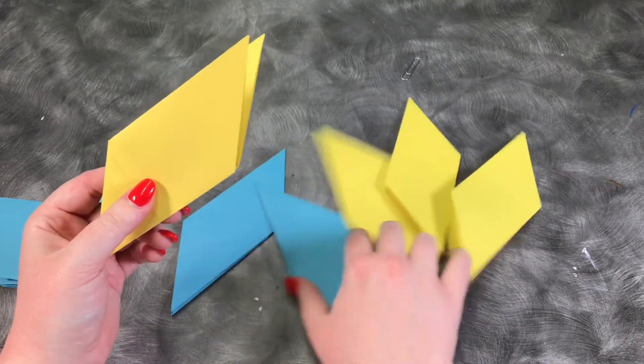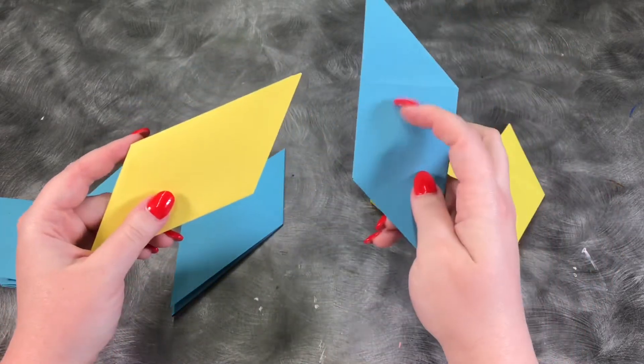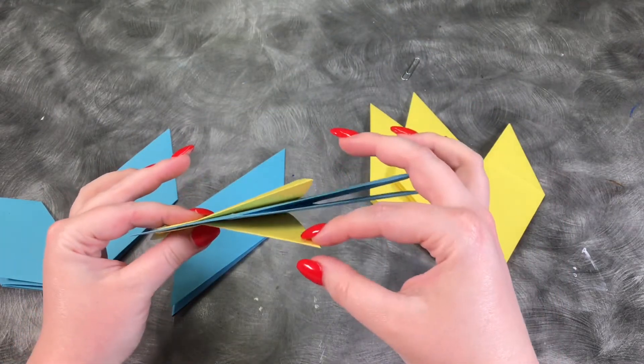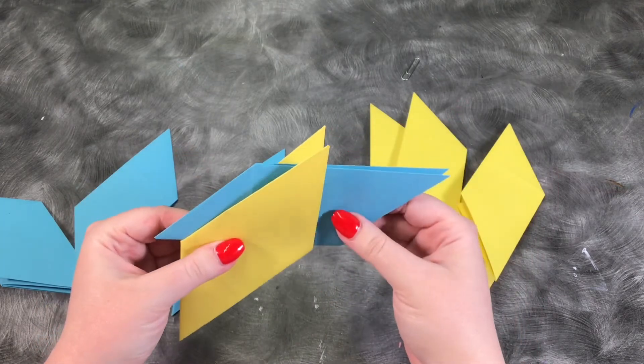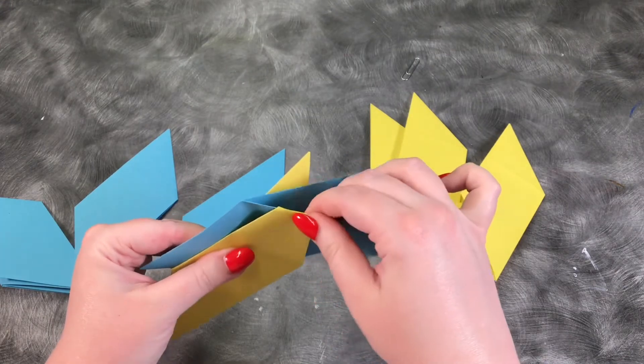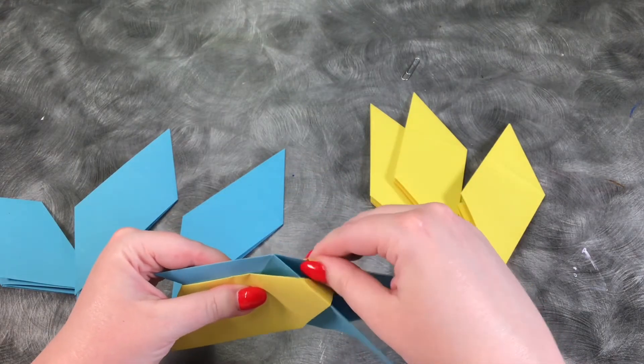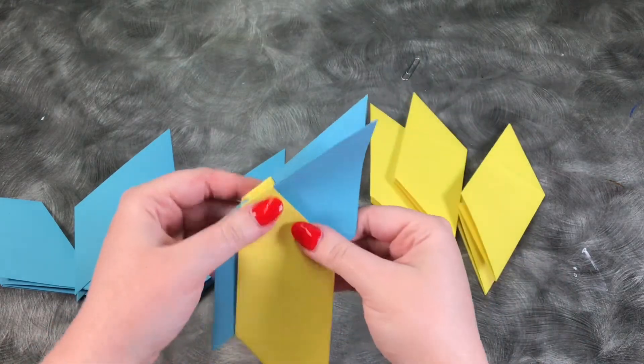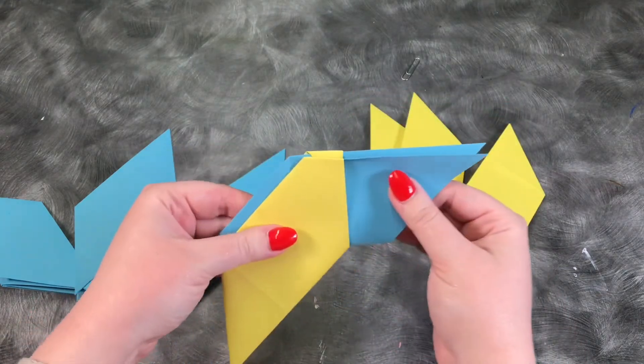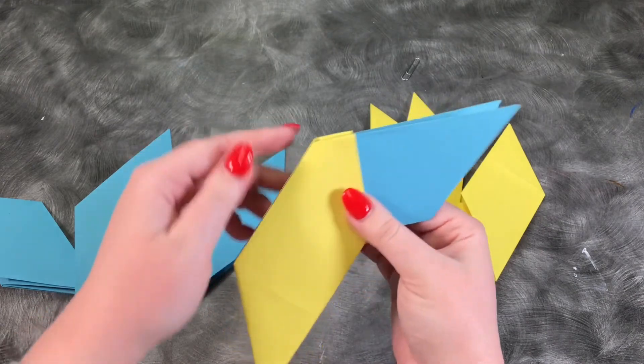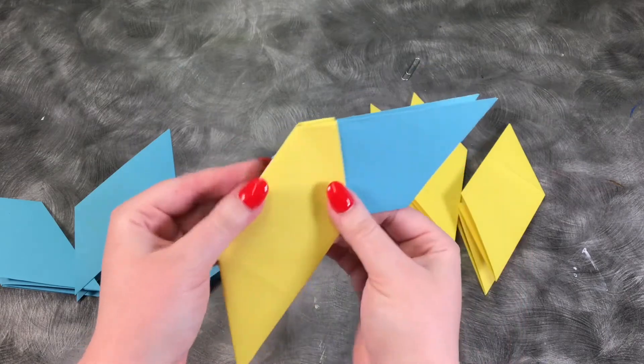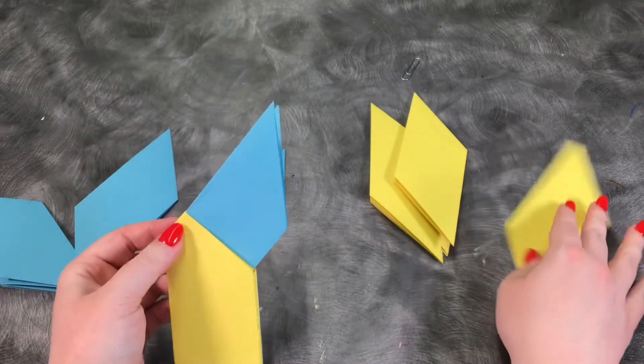So to start putting it all together you want to take the crease side and fit it in between the two flaps like so. And what you want to do is fold down the tips so the tips of the flaps are kind of caught in here. And then pull it so this part is flush with this part. And then basically you just repeat it.